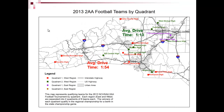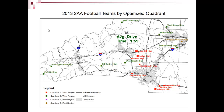For the other groups where the outlier wasn't a problem, the groupings stay exactly the same. Looking at the 2AA west region, the average drive time for the red schools is 1 hour and 54 minutes; for the green, 1 hour and 13 minutes — teams are interspersed across the region. After optimization, the green schools take 1 hour and 59 minutes, while the reds drop to just 51 minutes. The green quadrant takes the longer drives, but they're located along I-40, giving them relatively good access.